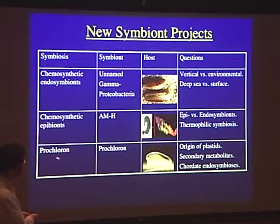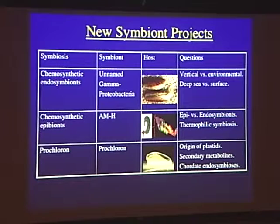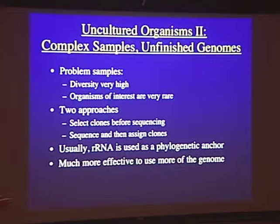A similar question we're working on is this organism called Prochloron, which is a photosynthetic symbiont of a primitive, deeply branching chordate. There are very few mutualistic endosymbionts of chordates that have been studied, so we're going to use the genome to understand whether something different happens in insects, worms, or clams versus this deeply branching chordate.